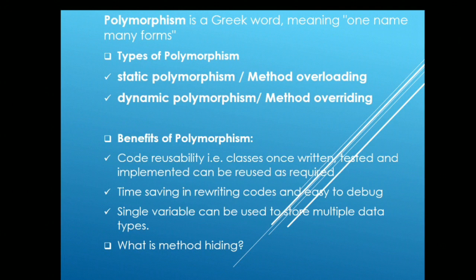What are the different benefits of polymorphism? First benefit is code reusability — classes once written, tested, and implemented can be reused as required. Also it saves you time in rewriting the code, it is easy to debug, and a single variable can be used to store multiple data types.